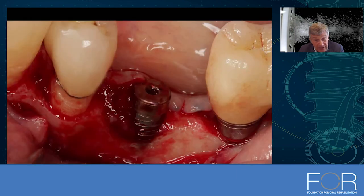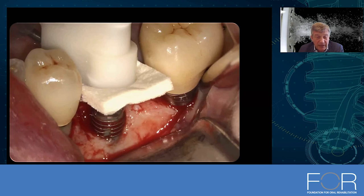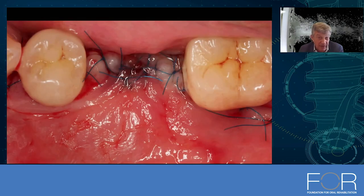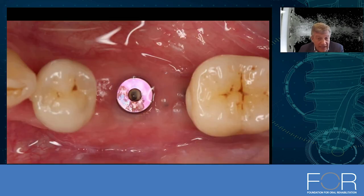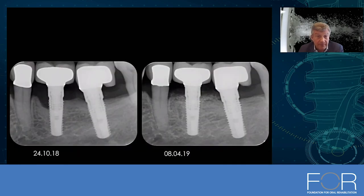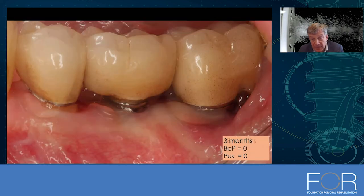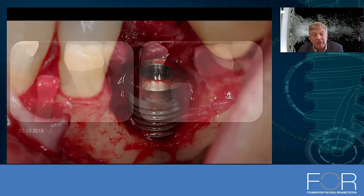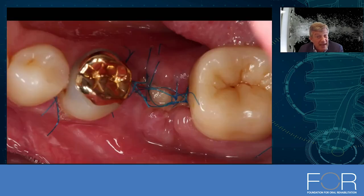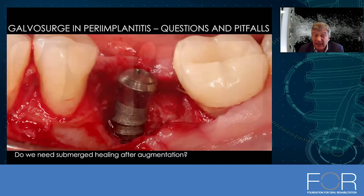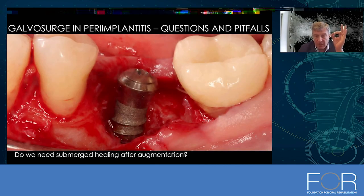RP3 cases are really difficult because we are not able to augment them — you have to decide whether to remove or maintain those implants. We try to close the flap but very often we have exposure. As you can see, we don't always achieve complete bone fill, but the bone fill we do achieve is meaningful, and clinical results demonstrate long-term stability. This is after three months, after 18 months — of course there is recession, but a stable situation. This brings us to the question: do we really need to close the flap when we have exposure?